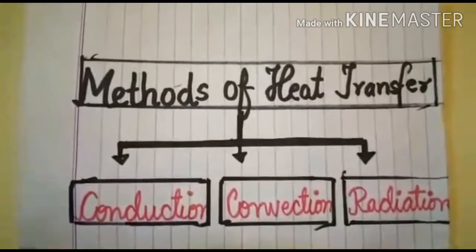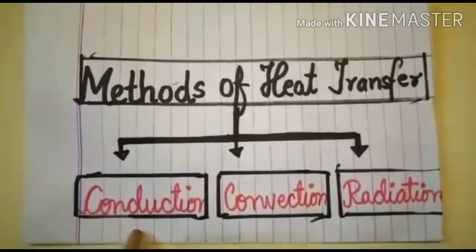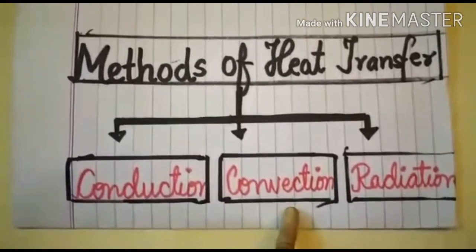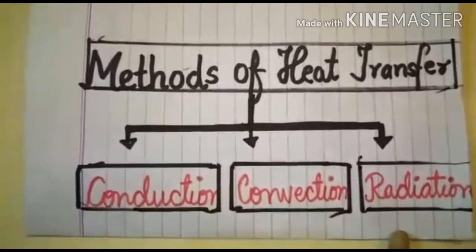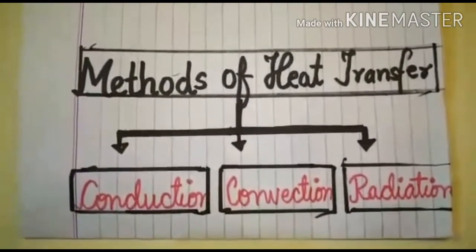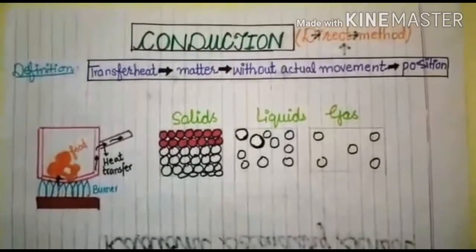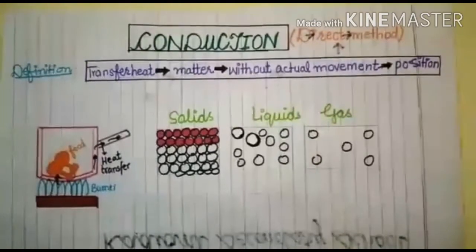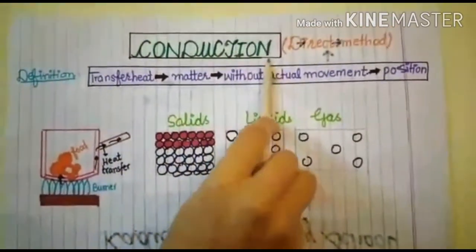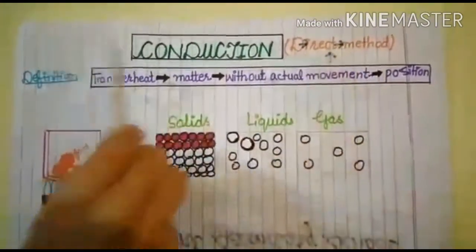Now we will explain the methods of heat transfer. The first method is conduction — the direct method. The second is convection, and the third is radiation. The first method we will study is conduction, the direct method of heat transfer.